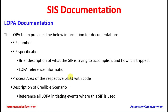LOPA reference information: each LOPA will have multiple scenarios, and in each scenario there will be a number according to the plant location and equipment location. The process area of the respective plant with its code will be included — each plant will have a code for the respective industry. A description of credible scenarios, covering whatever scenarios have credibility and target risk factors under different circumstances, will also be included. Additionally, references to all LOPA initiating events where the SIF is used must be documented.